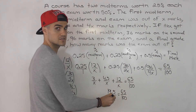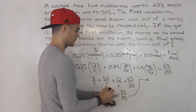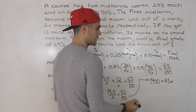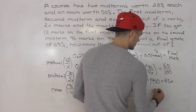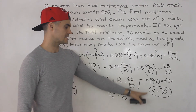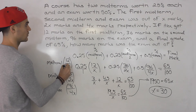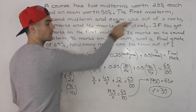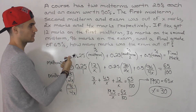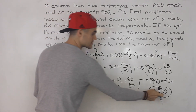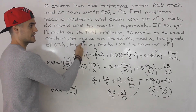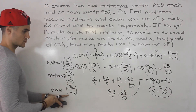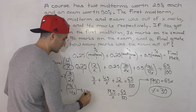To solve for X, we cross-multiply: 100 times 19.5 gives 1950, and 65 times X gives 65X. Dividing both sides by 65 gives X equals 30. X represents what midterm one was out of — 30 marks. But the question asks how many marks the exam was out of. The exam was out of 4X, so 4 times 30 equals 120 marks.